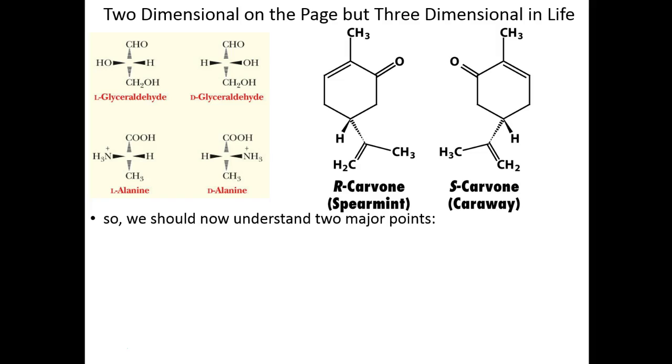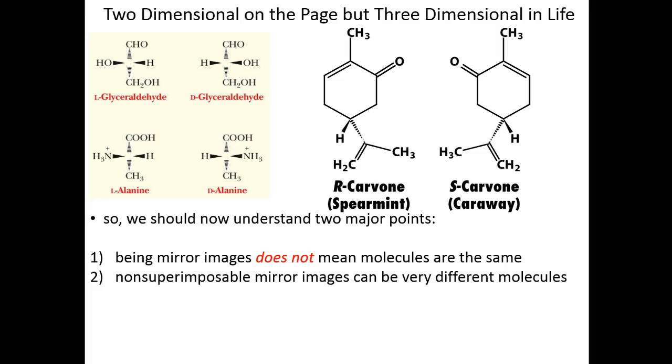Incredible that two so similar molecules could have such different chemical properties and have such different triggering tastes. This demonstrates to us that we now should understand two major points. Just because you're a mirror image doesn't mean you're the same as the molecule you see in the mirror. And related but distinct, when molecules are non-superimposable mirror images, they can be very, very different molecules with very, very different properties. I like spearmint. I hate rye. Those are two distinct chemical properties.